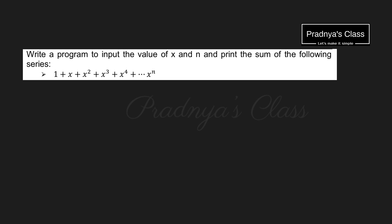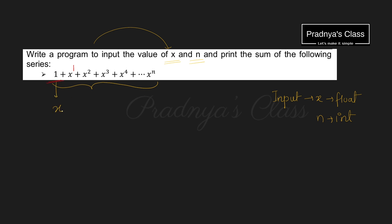Before writing the code, let's understand the logic. We have to take input for the value of x and n. x can be integer or float, but n should be integer because it's the exponent — x is the base. The power is getting incremented by 1. The first term is x raised to power 0, which equals 1. So the series is x^0, x^1, x^2, and so on up to x^n.